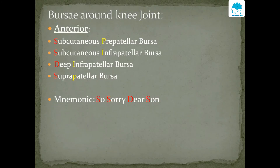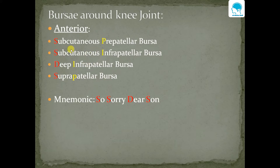Now, bursae around the knee joint — on the anterior aspect there are four bursae: subcutaneous prepatellar bursa, subcutaneous infrapatellar bursa, deep infrapatellar bursa, and suprapatellar bursa. We can simply remember these bursae using the mnemonic 'So Sorry Dear Son.'